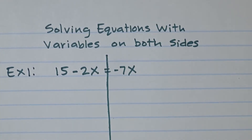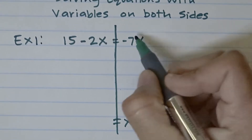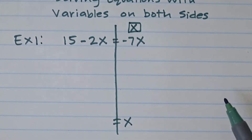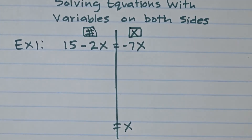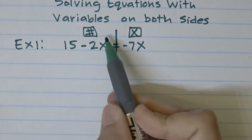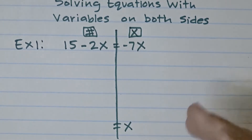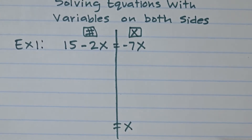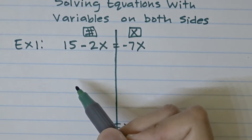You're probably thinking: what side am I going to put the x's on? I'm going to choose the right side. Think of it like a street — on the right side live all the x's, and on the left side live all the constant terms or numbers. At the end of the day, you have to make sure everyone's in the right place.